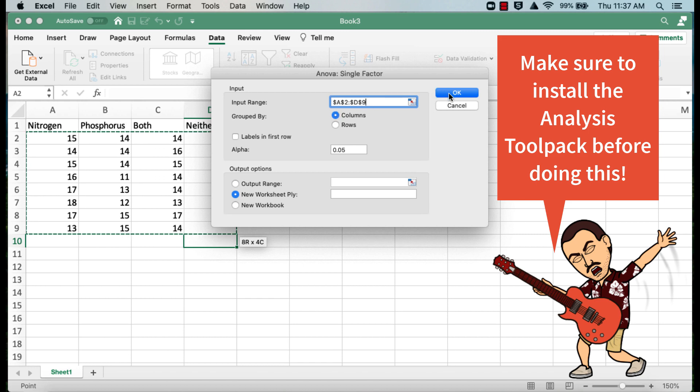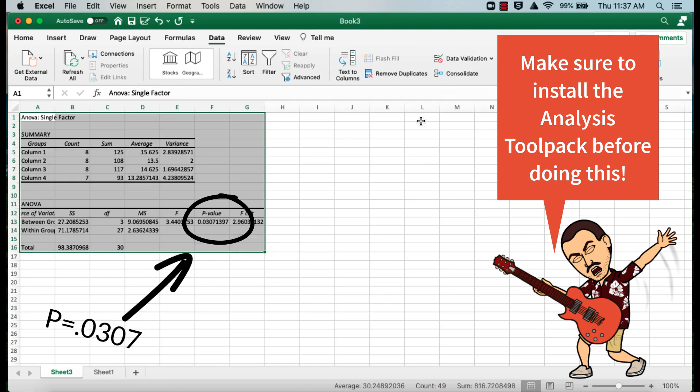Grouped by columns, which we already had, and we hit OK. And you can see right here, we get the same p-value. So we'd have the same conclusion.